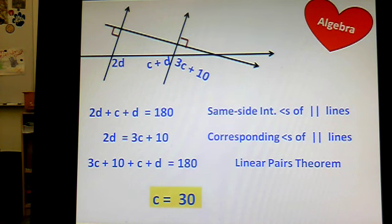I'm not going to show all the steps on there. It's just sort of algebra manipulation. Hopefully, you got c is 30, and if you got c is 30, then you end up with d being 50.